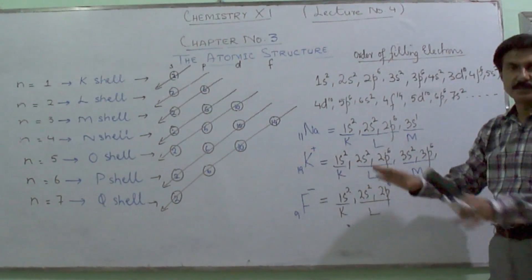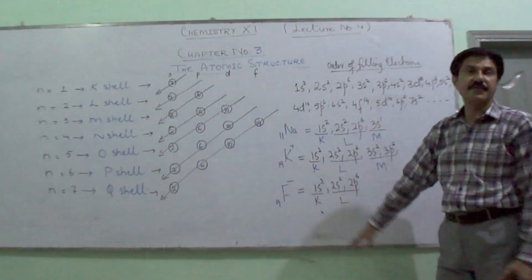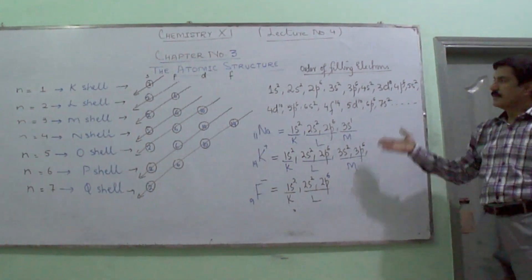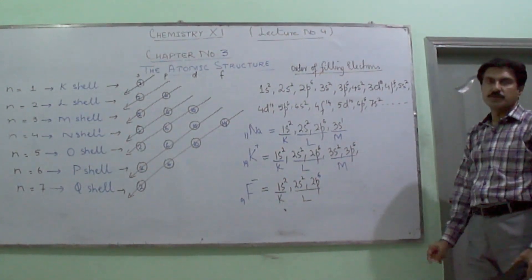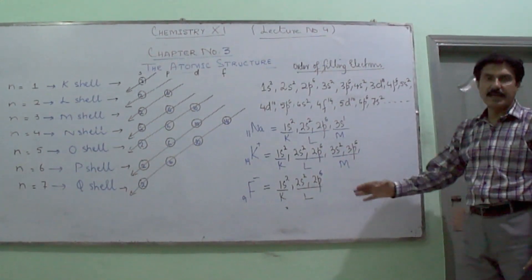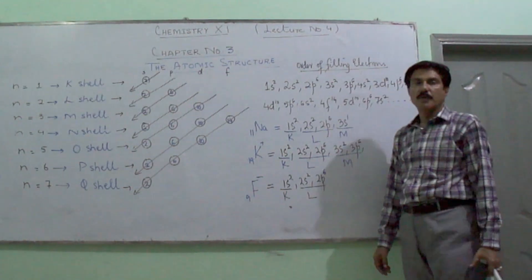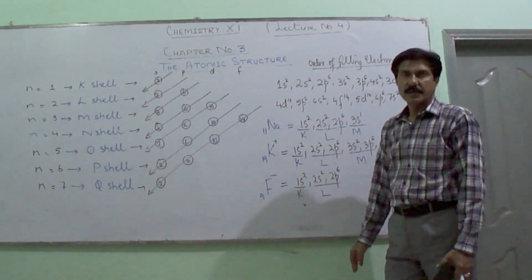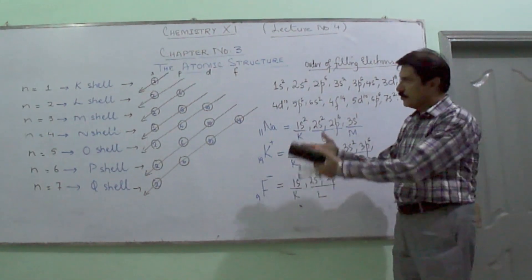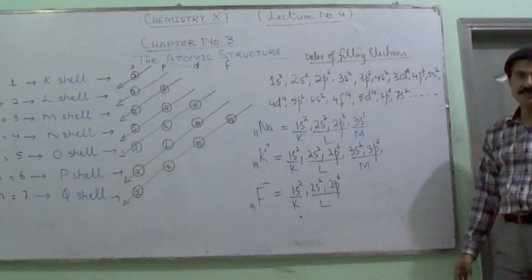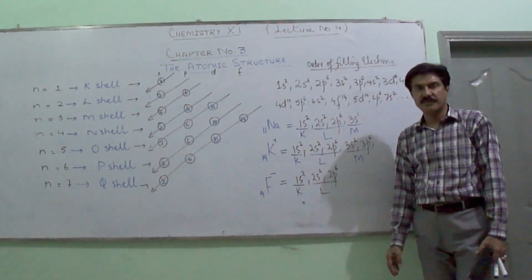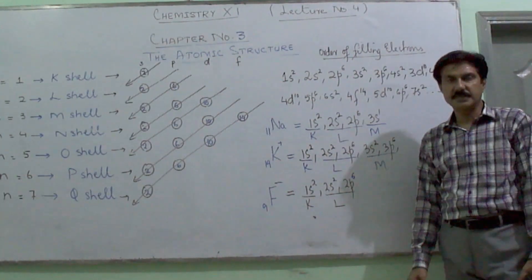In this way you can build up the electronic configuration following the Aufbau principle for various atoms and ions. My dear students, here I am completing today the first part of this lecture on electronic configuration. In my upcoming video lecture, you will have the remaining rules to be discussed: the n+l rule, Hund's rule, and the Pauli exclusion principle. Hopefully you have understood all things which I have explained today. Inshallah we will be meeting in the upcoming video lecture. Thank you. Assalamu alaikum warahmatullahi wabarakatuh.